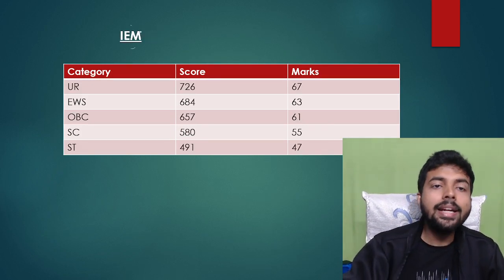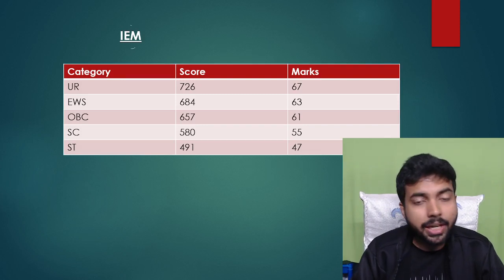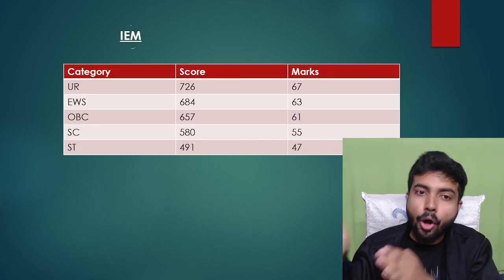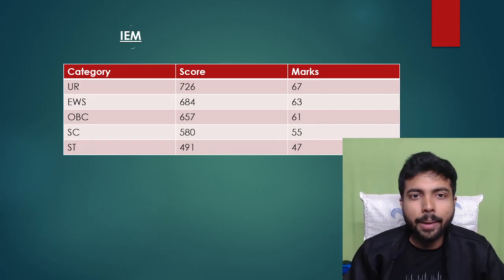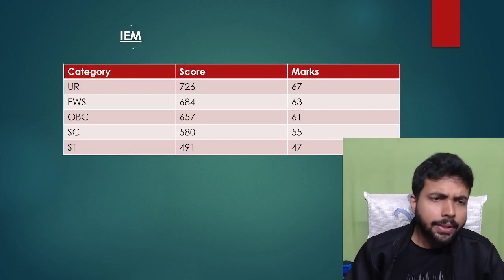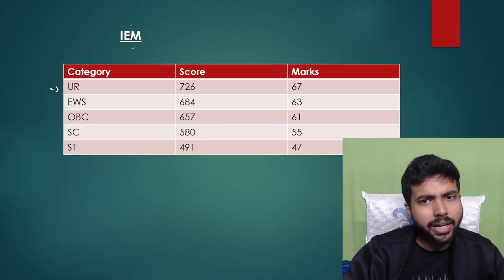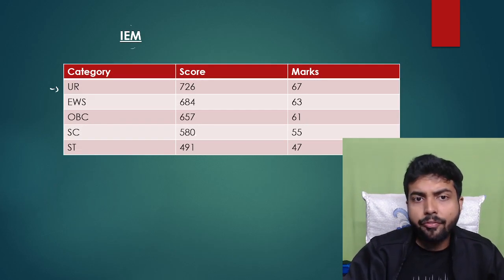Industrial Engineering and Management is a very important branch — more of a non-core type branch, but it has excellent non-core placements, which is a huge benefit at IIT Kanpur. For the general category, the GATE score is 726 and marks required is 67. EWS requires 684 score and 63 marks. OBC requires 657 score and 61 marks. SC requires 580 score and 55 marks. ST requires 47 marks.